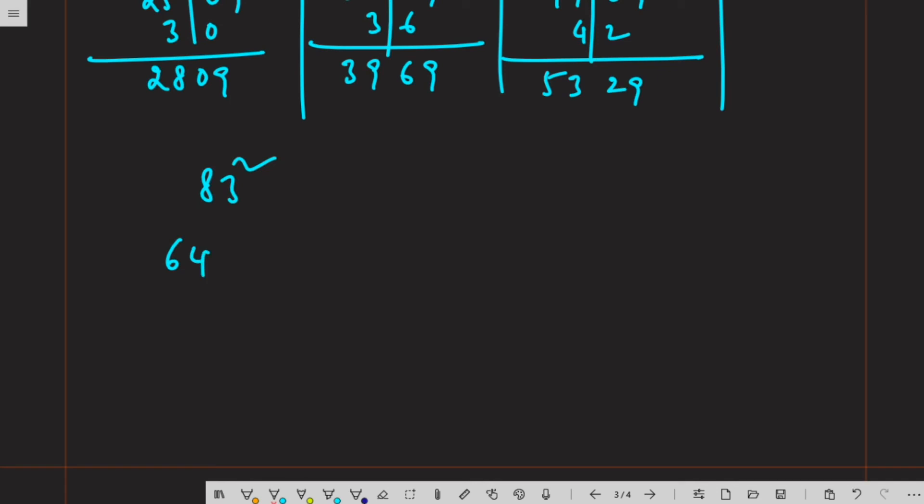8 square is 64, 3 square is 09, and 8 times 6 is 48. So your answer is 6,889.